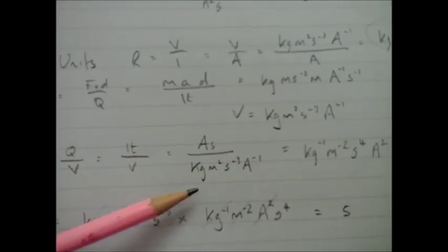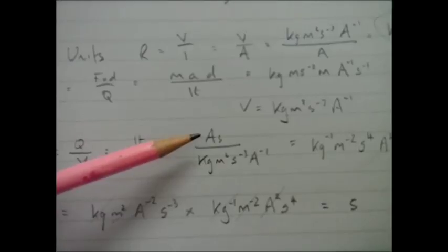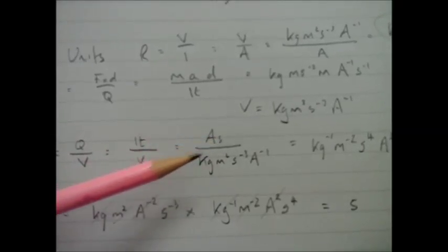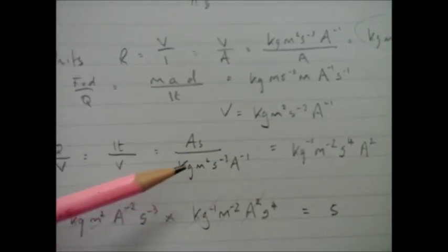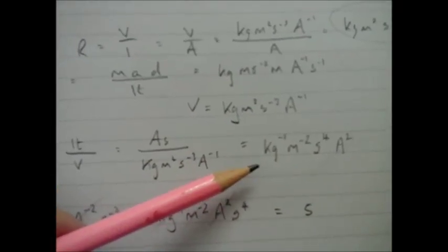So I can put them units on the bottom. Current is amps, time is seconds. So I get amps seconds divided by all them units. Ends up giving me that. That's the base units for capacitance.